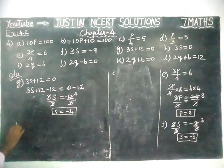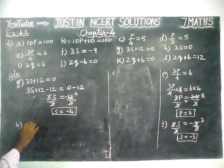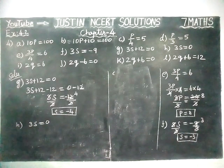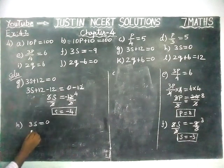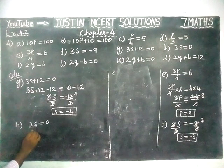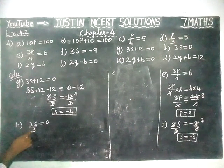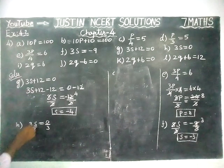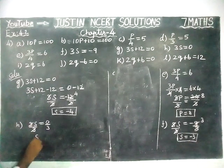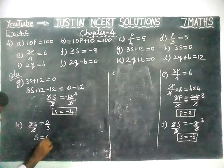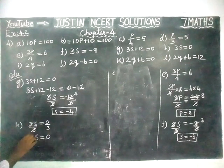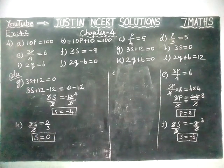Then option H: 3S is equal to 0. Here, 3 is in multiplication, so we are going to divide by 3. Divide 3 on both sides. 3S divide by 3, 0 divide by 3. 3, 3 gets cancelled. S is equal to 0 divided by 3 is equal to 0. Because if you divide 0 by any number, we will get 0 only. So, S value is equal to 0.